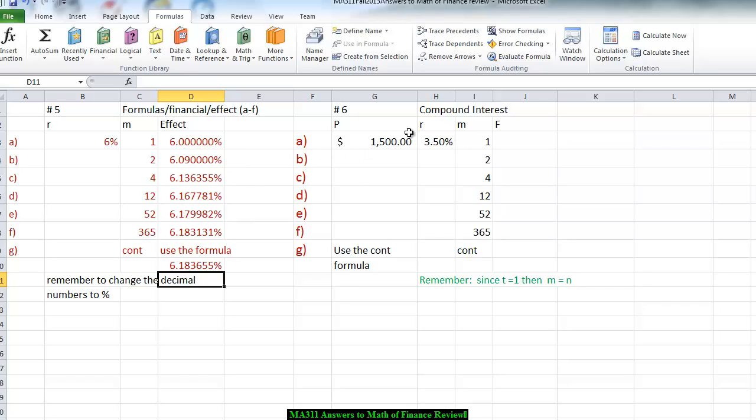Let's go to question number six. We are going to deposit $1,500 earning 3.5% interest, and again, we're going to deal with that annually, once a year, semi-annually, twice a year, quarterly, four times a year, monthly, which is 12 times a year, weekly, which is 52 times a year, and daily, which is 365 times a year, and finally, continuously.